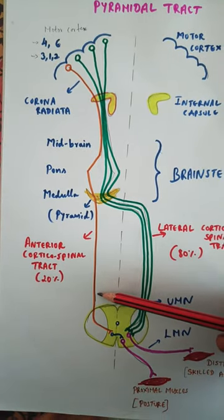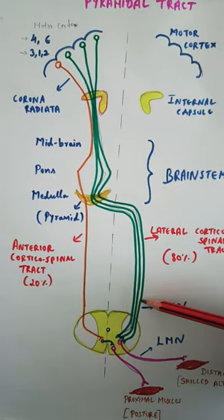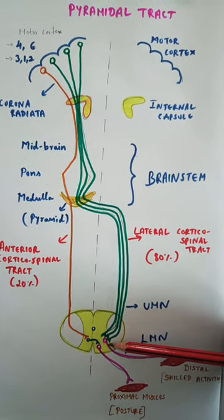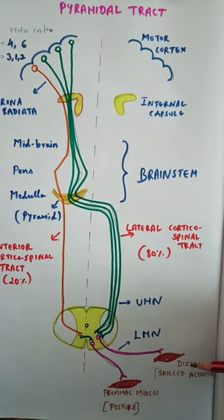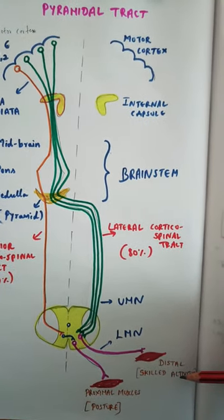Now, the lateral corticospinal tract ends on the lower motor neuron, which is placed laterally, and supplies the distal group of muscles involved in skilled activities.